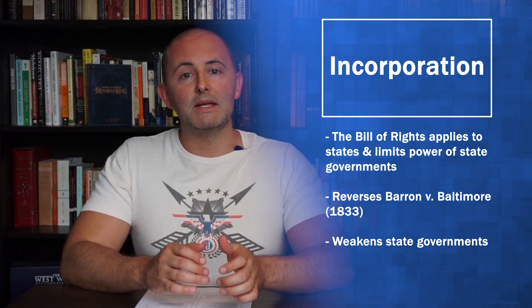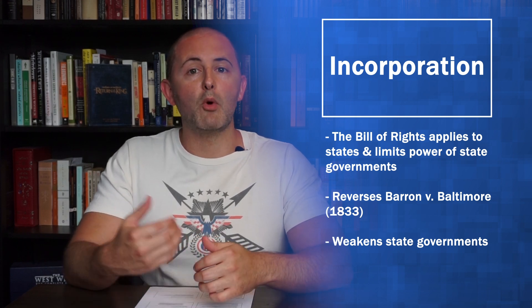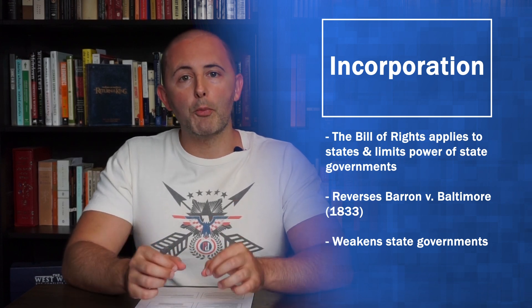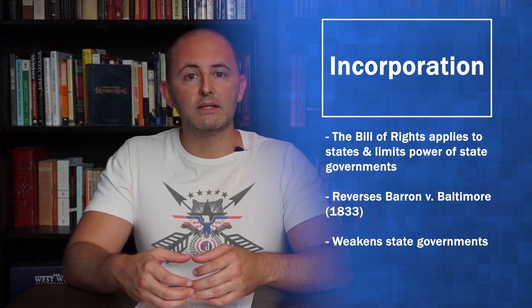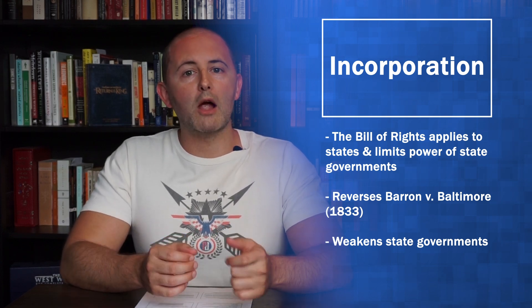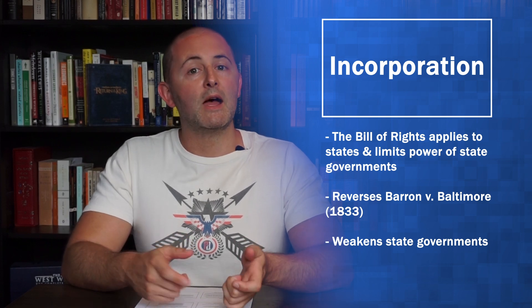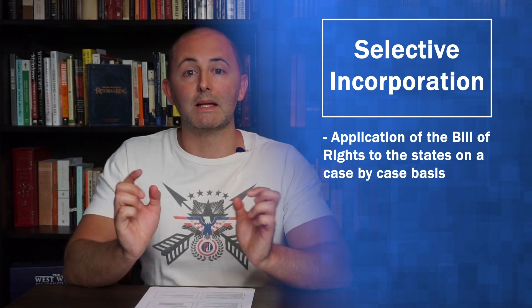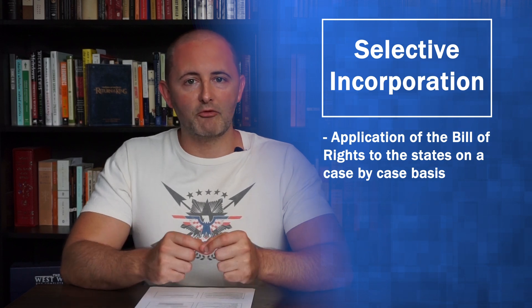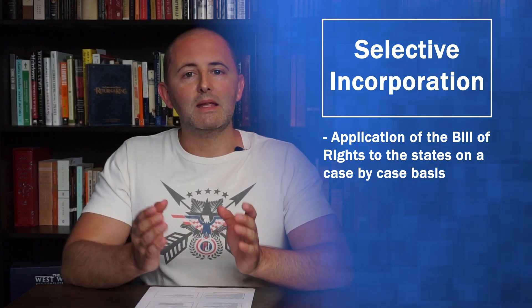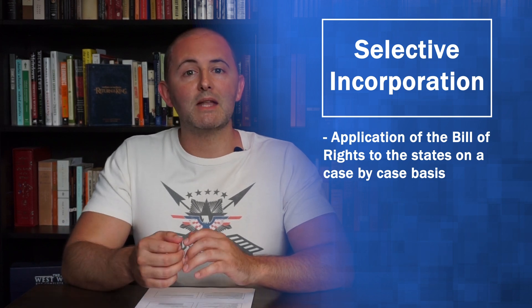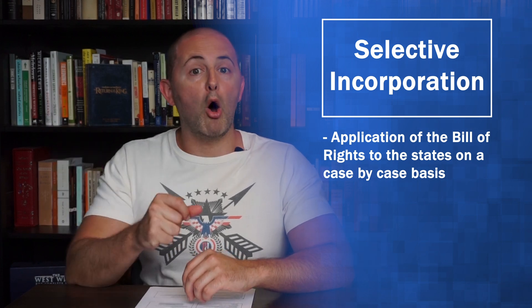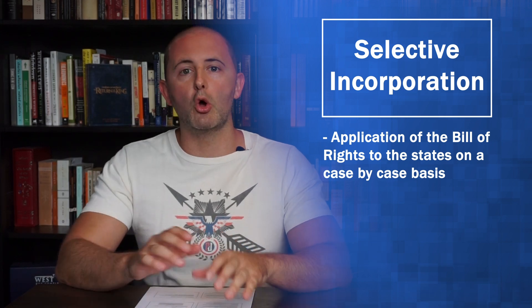Now, states have to be restricted in the same way as the federal government when it comes to these fundamental liberties. That's what incorporation means — incorporation is the application of the Bill of Rights to the states, requiring states to follow the Bill of Rights the same way that the federal government is. But notice that we talked about selective incorporation — this has been done on a case-by-case basis, not all at once. There is no single moment where all of a sudden the entire Bill of Rights applied to the states.